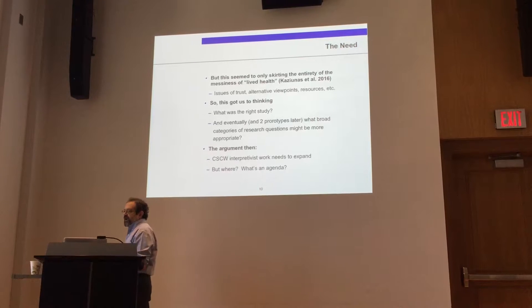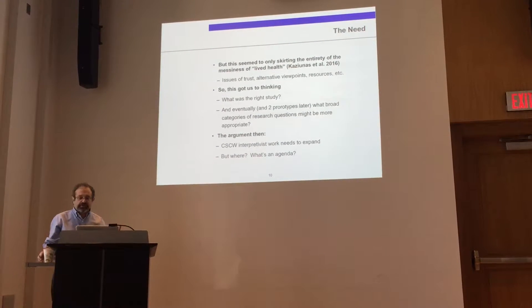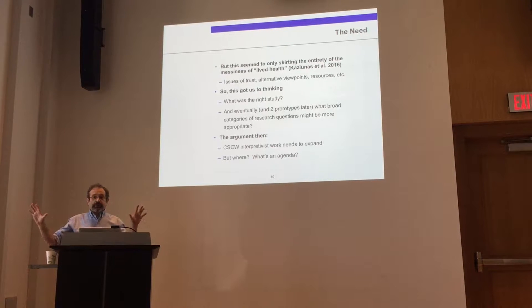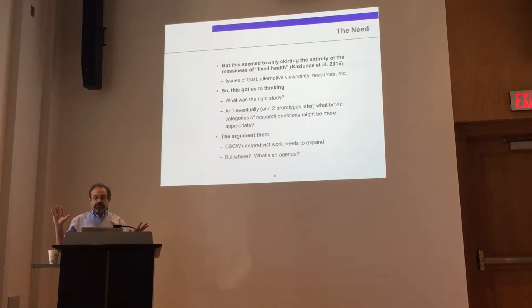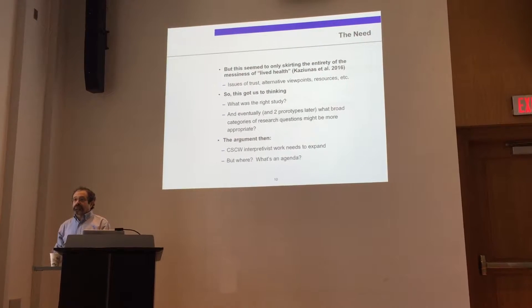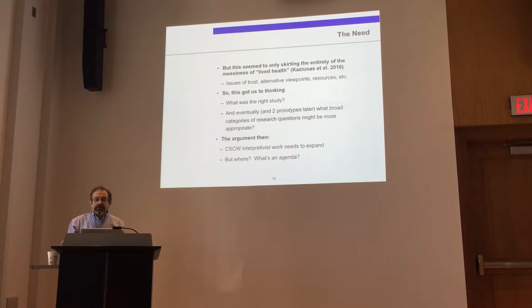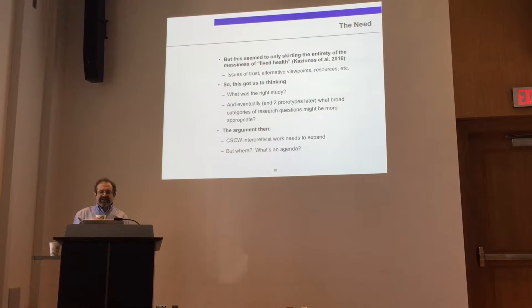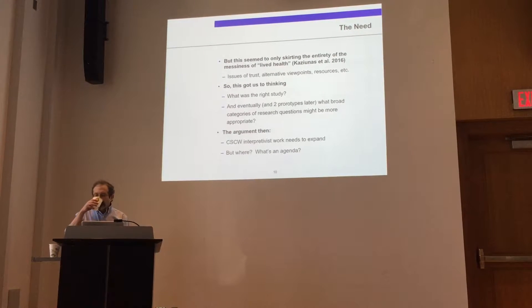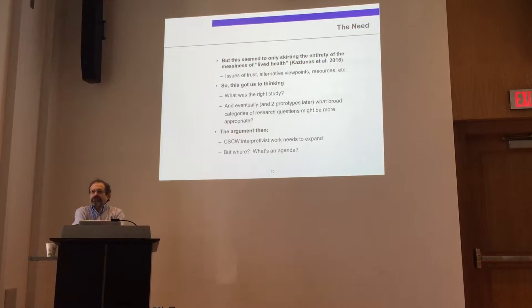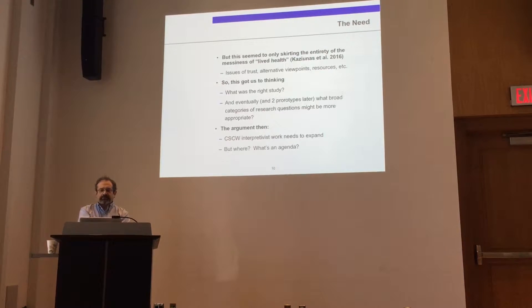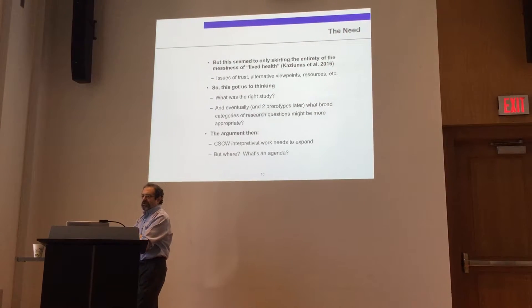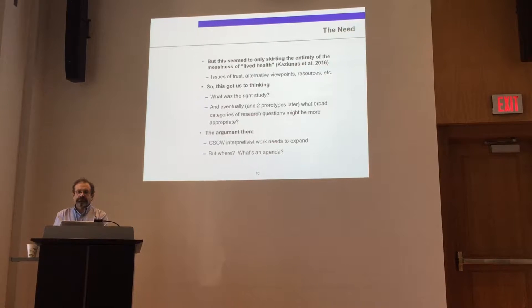There were a lot of other things going on besides just a need for raw information — lots of issues of trust, alternative viewpoints, other groups of people feeding them information (some valid, some not), and they didn't necessarily have the right resources to do the translations we were thinking of. This got us thinking about what the right study actually was. Two prototypes later, we started thinking: what are the broad categories of research questions that are missing here? What might be more appropriate? The argument then became that maybe CSCW interpretive work needs to be expanded — but where, and what's an agenda?